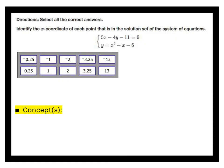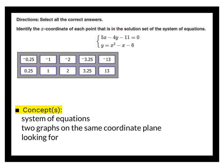Continuing where we left off, we have another system of equations. The directions say to select all the correct answers — it doesn't tell me how many there are. It asks to identify the x-coordinate for each point in the solution set. Remember what a system is: there are two graphs on the same coordinate plane, and we're looking for where they intersect — specifically the x-coordinates.